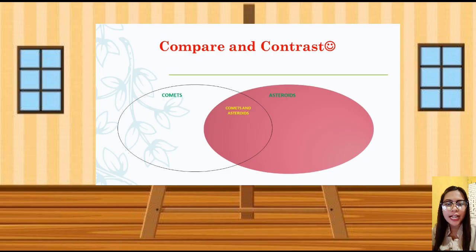let's compare and contrast comets from asteroids. So on your paper, please draw a Venn diagram. On the left side, please put the comets. And then, you'll put the differences of comets from the asteroids.